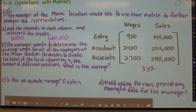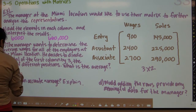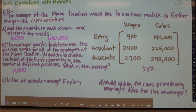In part B, the manager wants to determine the average wages for all employees at the Miami location. He decides to divide the total of the first column — wages — by 3, the number of different positions. So if we take 6,000 and divide it by 3, we get 2,000. The average wage is 2,000.